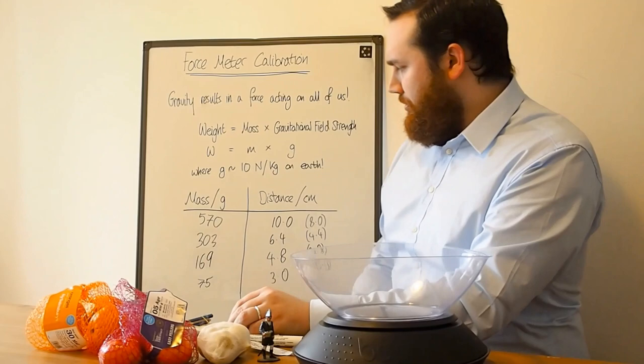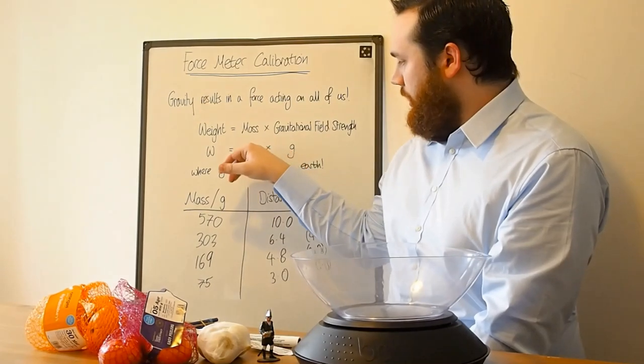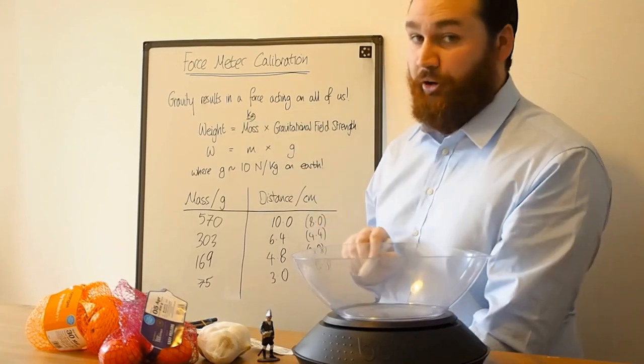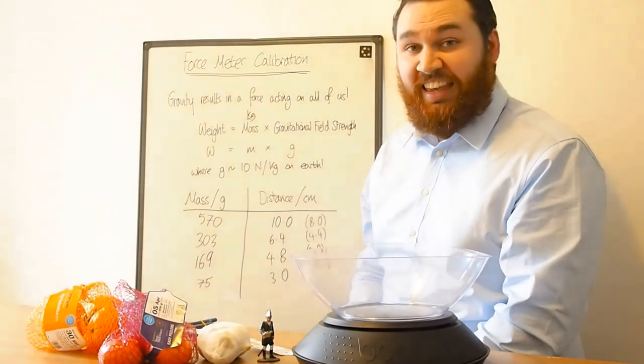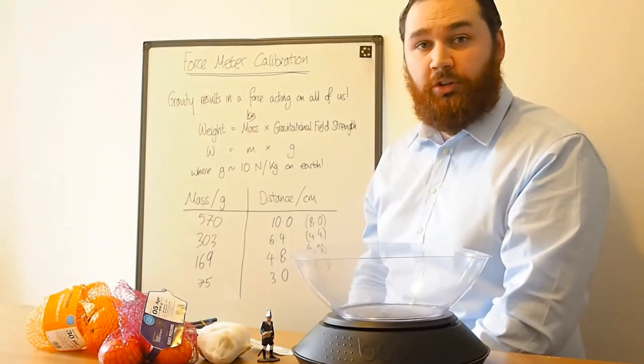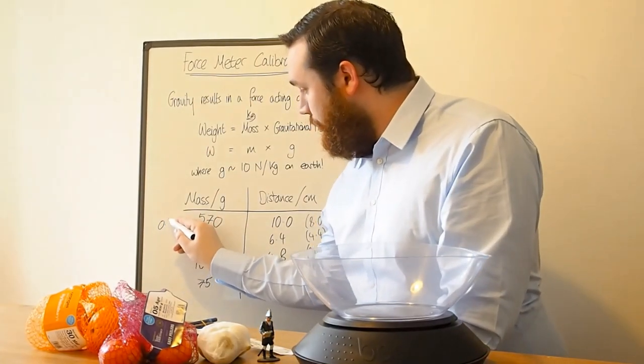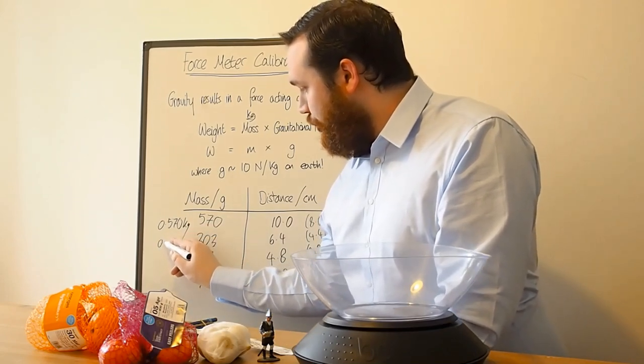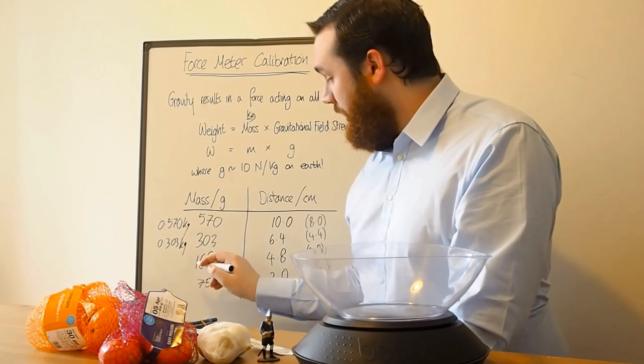This one will be 2.8. Didn't move very far from that one. And this one will be 1. So what we've got here is I've got the masses in grams. And we can use that to calculate the weight. But remember, the mass here needs to be in kilograms.